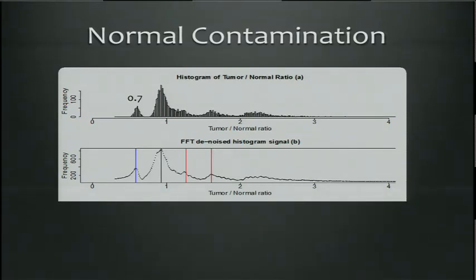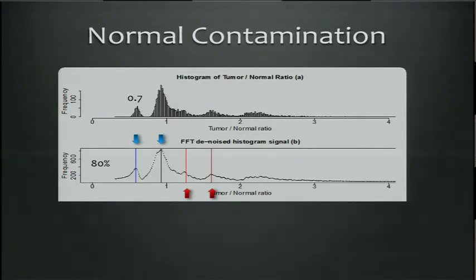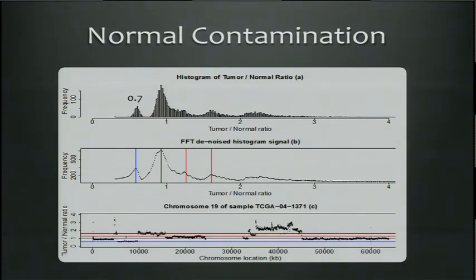If you locate the peak and identify where copy number two and copy number one reside — shown as the black and blue lines in these slides — you can calculate the contamination ratio and use that ratio, along with the copy-number-neutral line location, to predict where copy number three and four will appear in the histogram. That fits the data extremely well. If you overlay these lines with the ratio plot versus chromosome location, you can see they perfectly explain the segments observed.